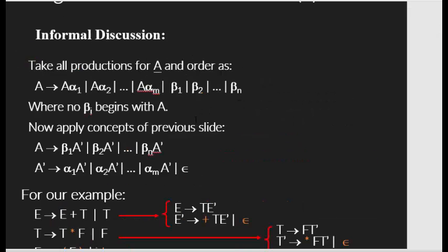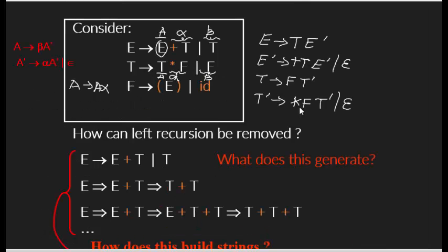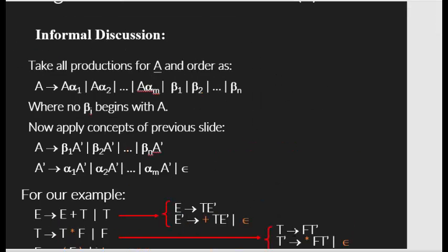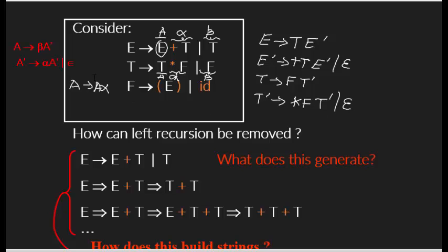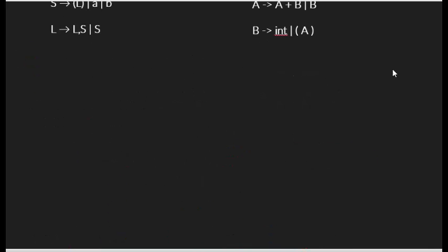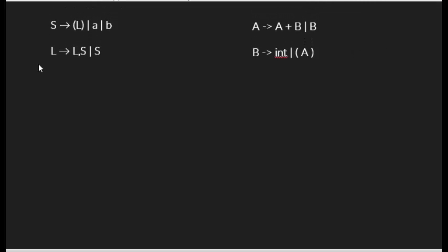Let's match the answers: E goes to T E-prime — yes. E-prime goes to plus T E-prime or epsilon — yes. T goes to F T-prime — yes. T-prime goes to star F T-prime and epsilon. Now let's look at more examples. S goes to — this part is fine, S does not appear as the leftmost symbol here, but here we have to convert it.